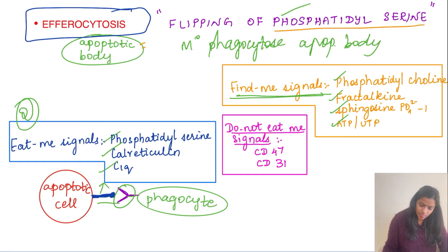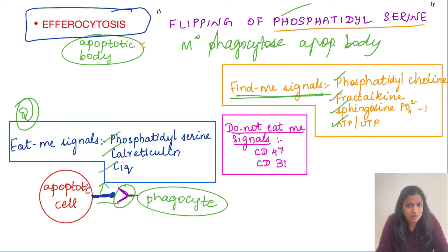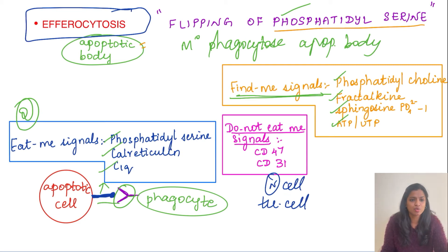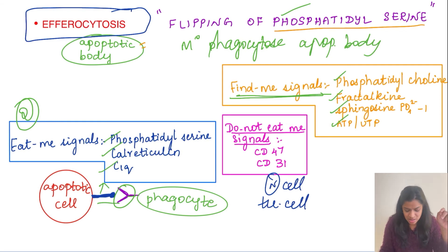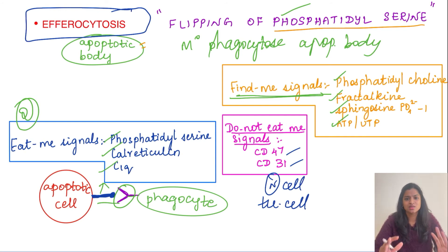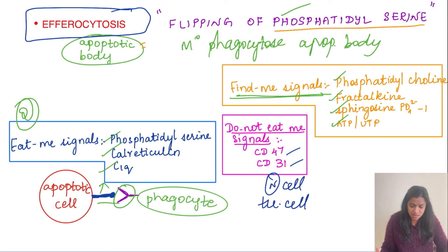There are also do-not-eat-me signals. Normal cells and tumor cells that want to evade apoptosis express these signals. CD47 and CD31 are the do-not-eat-me signals. When these are present on a cell, phagocytes recognize the signal and leave the cell alone. So remember: do-not-eat-me signals, find-me signals, and eat-me signals — these are high-yield exam questions.